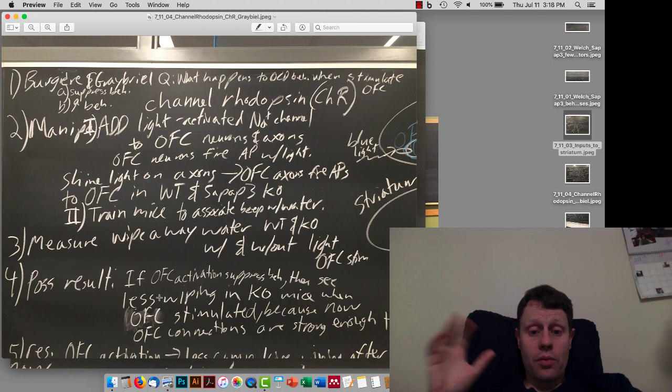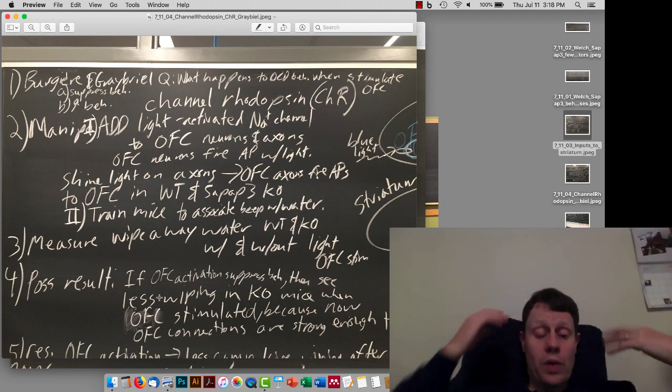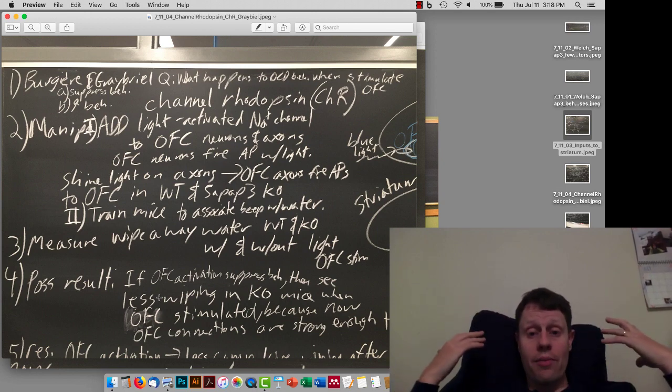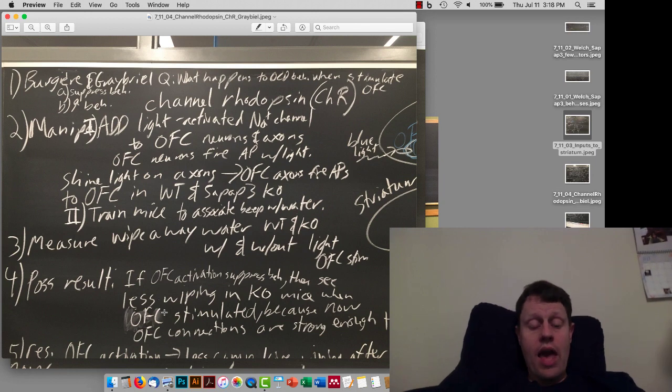Because now, those orbital frontal cortex connections, we're just going to infer that maybe now we've sort of turned up those weak orbital frontal cortex connections enough to allow the mouse to break out of this obsessive behavior. And in fact, that's exactly what they saw and exactly what they infer.